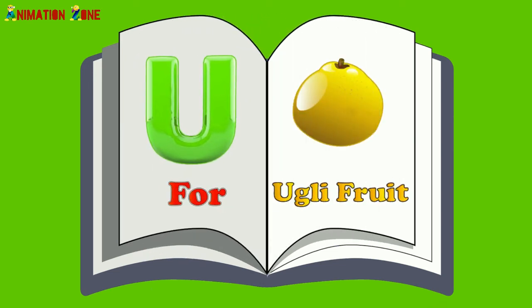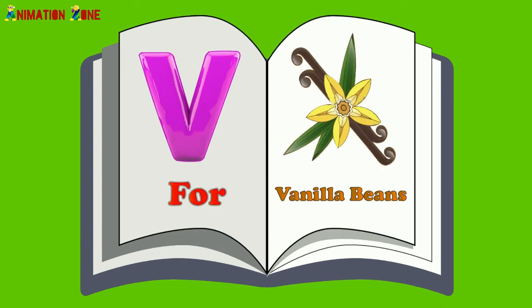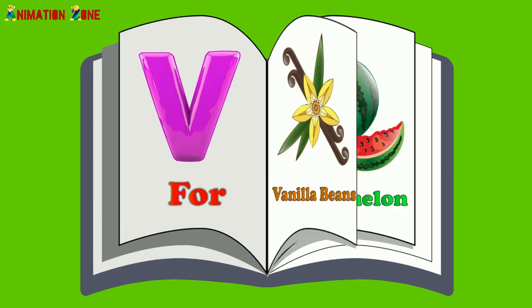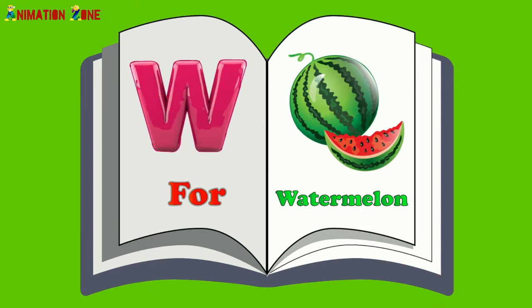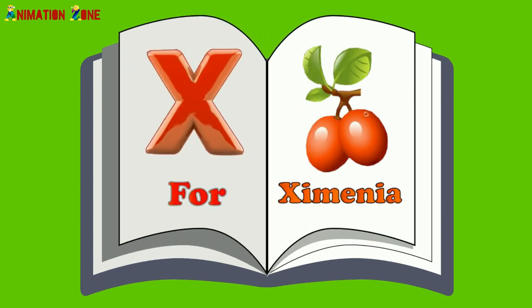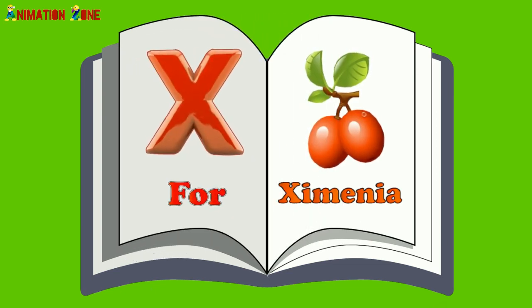U. U for ugly fruit. V. V for vanilla bean. W. W for watermelon. X. X for ximnia.